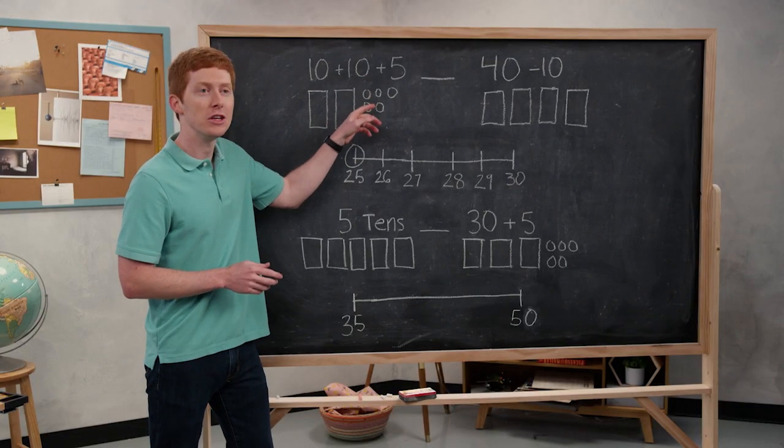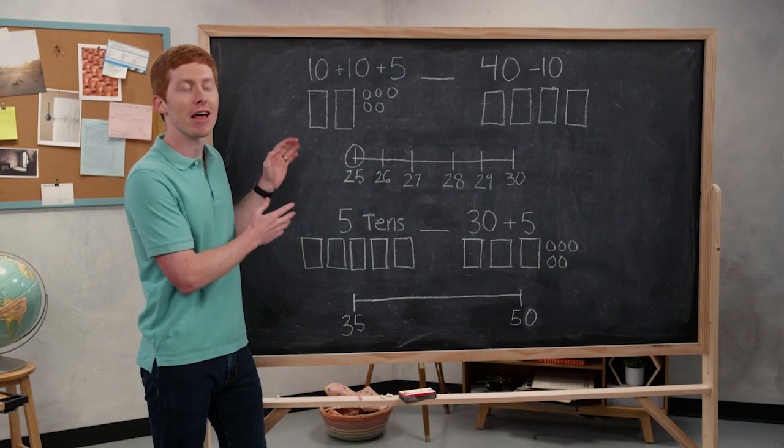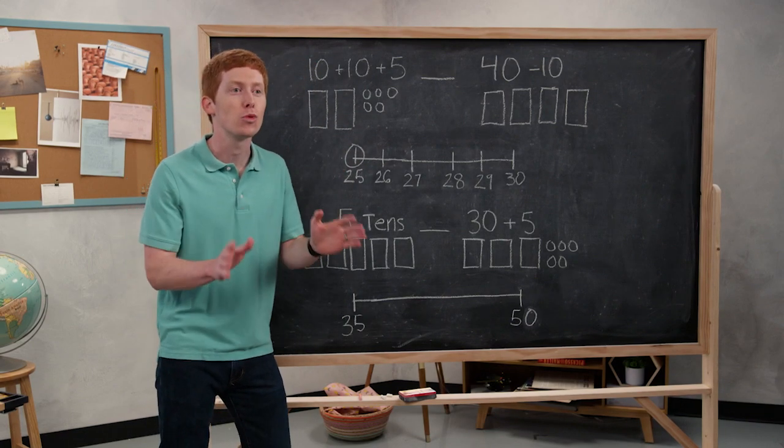Now we can count all these up together and I have 10 plus another 10, 20, 21, 22, 23, 24, 25. Okay. So our left side over here is the same as 25.